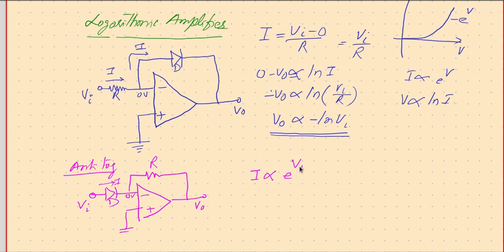The current flowing through the diode will be proportional to e to the power Vi, and the same current has to flow through the resistor. Therefore, zero minus Vo, the current I which is proportional to e to the power Vi, means this Vo is proportional to minus R times e to the power Vi. Or in other words, we can say Vo is proportional to negative e to the power Vi. So e to the power Vi is nothing but anti-log in natural sense.